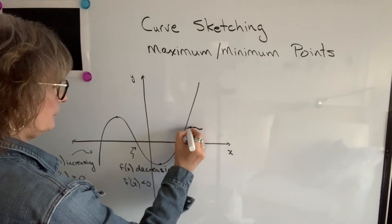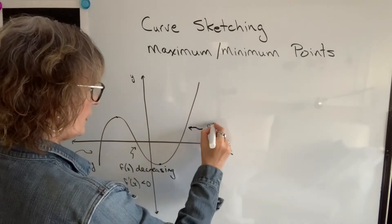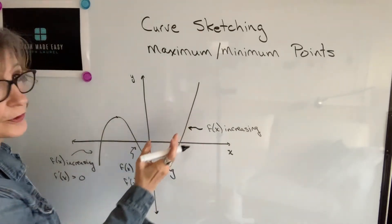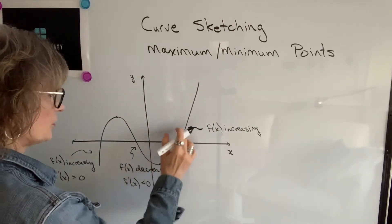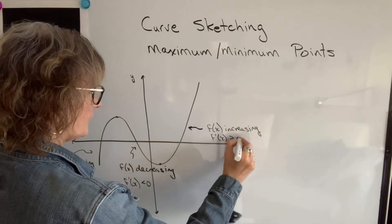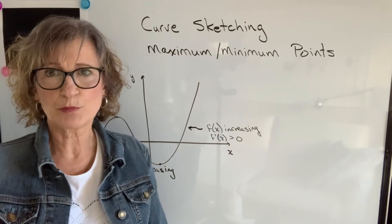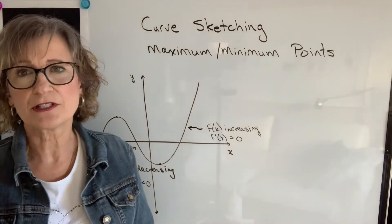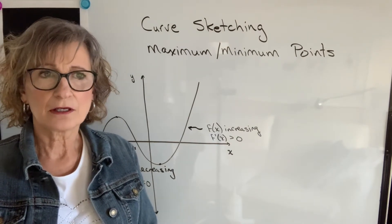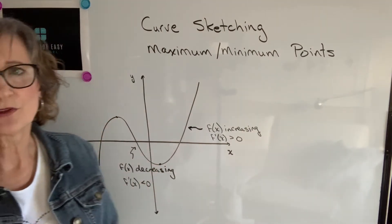Similarly, back to this interval from this point on, we can see again that the function, or the y value, is increasing, and the slope of the tangent line to the curve at any point along this interval would be positive. So by knowing the intervals where the derivative is positive, we know that's the interval where the function is increasing. If we know the interval where the derivative is negative, then we also know the interval where the function is decreasing.